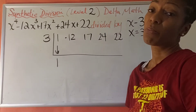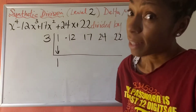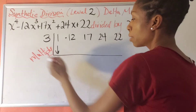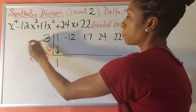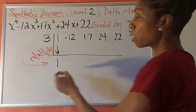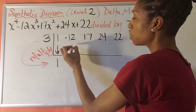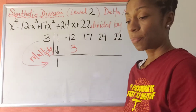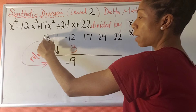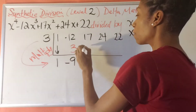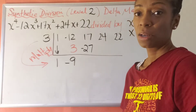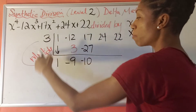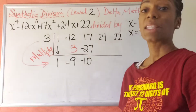The next part of the process is to multiply and add, repeating: multiply, add, multiply, add. Every number that we put down here, we're going to multiply by 3, and then we put our product up here. So 3 times 1 is 3. Negative 12 plus 3 is negative 9. Then we multiply: 3 times negative 9 is negative 27. And then we add 17 and negative 27 to get negative 10. Then we multiply: 3 times negative 10 is negative 30.